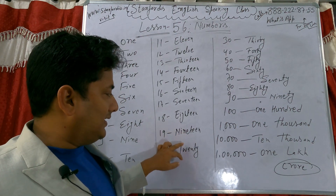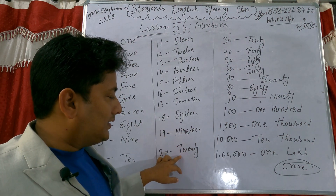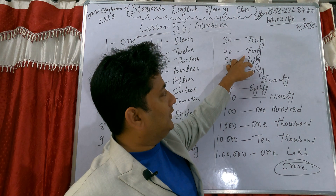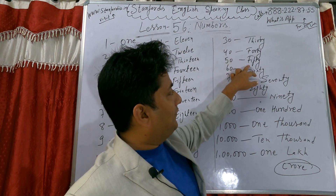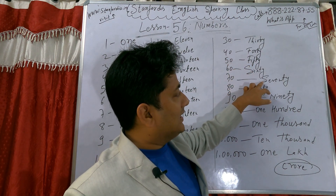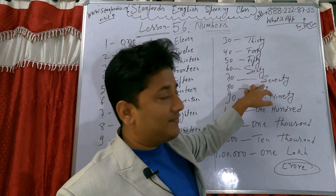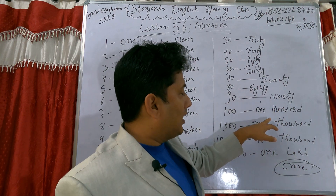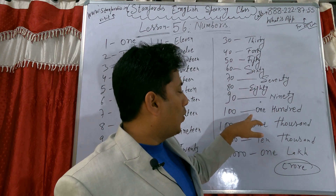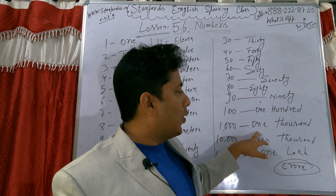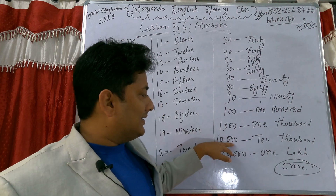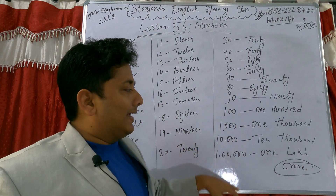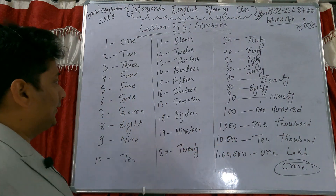Nineteen, twenty, forty, fifty, sixty, seventy, eighty, ninety, one hundred, ten thousand, one lakh. So people, please have a look here.